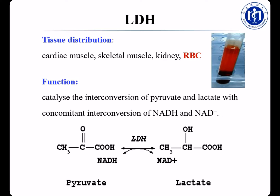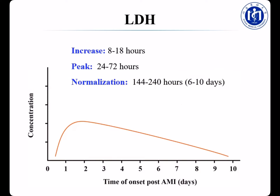Now let's look at another important enzyme: LDH. LDH is mainly distributed in cardiac muscle, skeletal muscle, kidney, and red blood cells. So LDH is also not specific for cardiac diseases. We should pay attention to red blood cells, which contain relatively high levels of LDH. Therefore, a hemolytic blood sample is not suitable for LDH detection — when red blood cells rupture, LDH leaks into the blood and the serum level increases falsely. LDH functions to catalyze the interconversion of pyruvate and lactate, an important step in glycolysis.